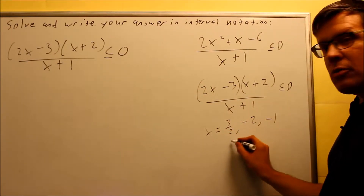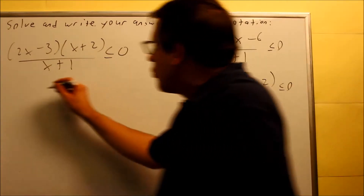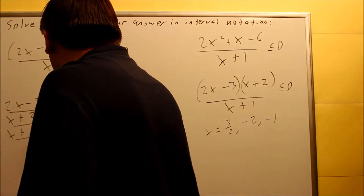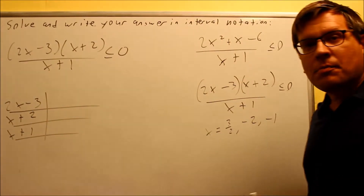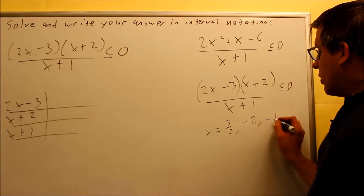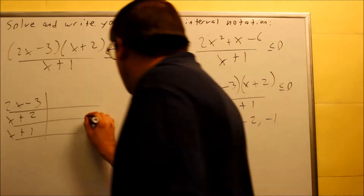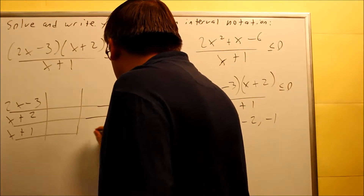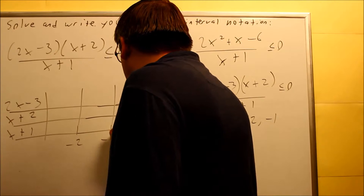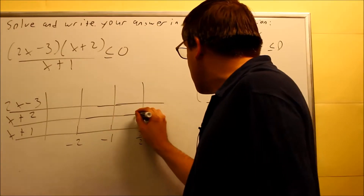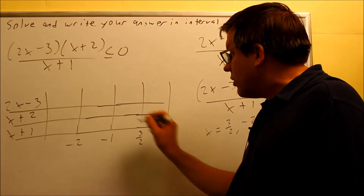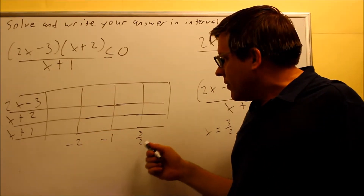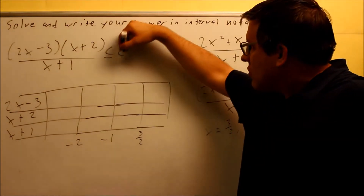For the table method, we already determined these three numbers: 3 halves, negative 2, and negative 1. I'm going to write those here with the factors 2x minus 3, x plus 2, and x plus 1. For each of these numbers, I'm going to draw one line on my table. That represents negative 2, negative 1, and 3 halves. Remember, put them in order from smallest to largest. I make one more column beyond the 3 halves. So now here's my complete table — these three numbers correspond to what made the top or bottom equal to zero. I have the zero on the end, and I'm ready now to use my test points.